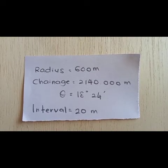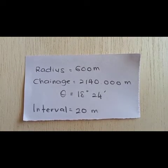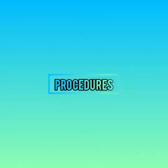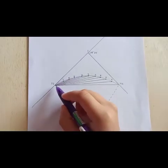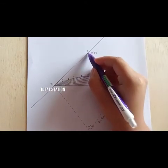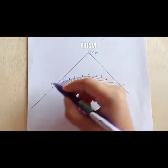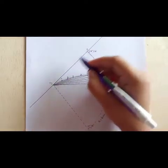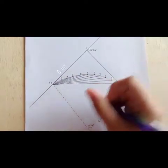This is the information that we get from the start month. First, set up the total station at T1, then the prism at point I. Make sure the line from T1 to point I is clear.